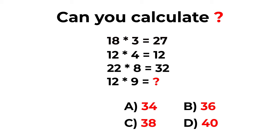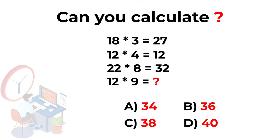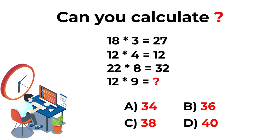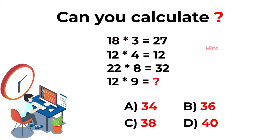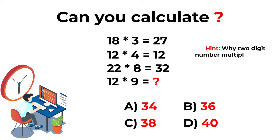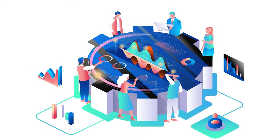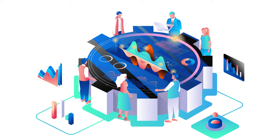Do you see the answer? Give yourself a little bit of time, as the answer may not be obvious, but in the end I'm pretty sure you will figure it out. Here's a quick hint: take a look and see why there are two-digit numbers multiplied by one-digit numbers, and how you can make it work in your advantage. Let's go ahead, reveal the answer, and get to the correct solution together.